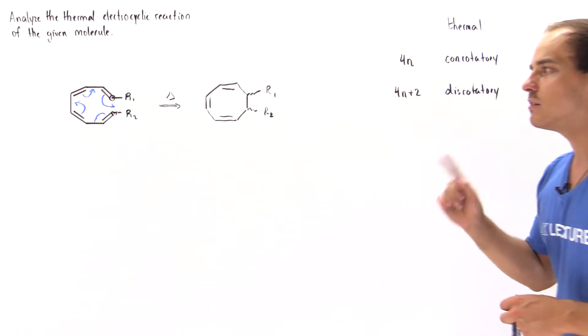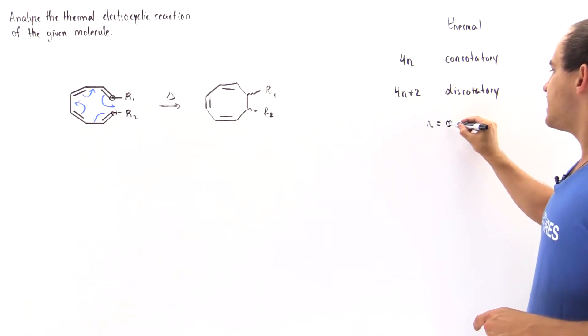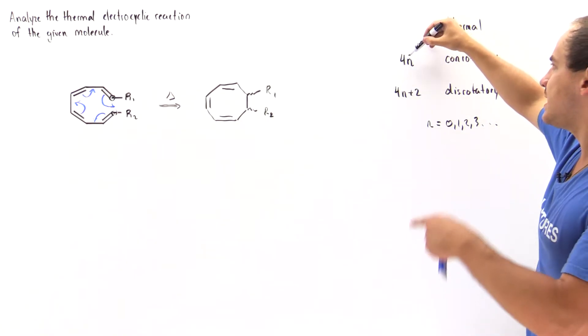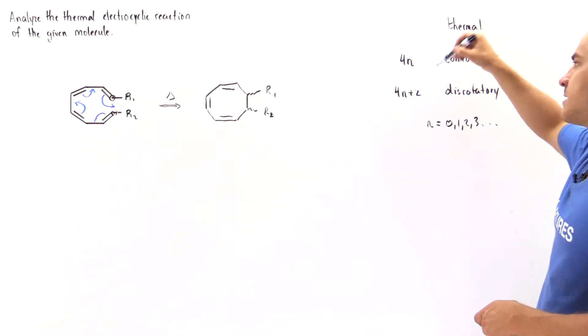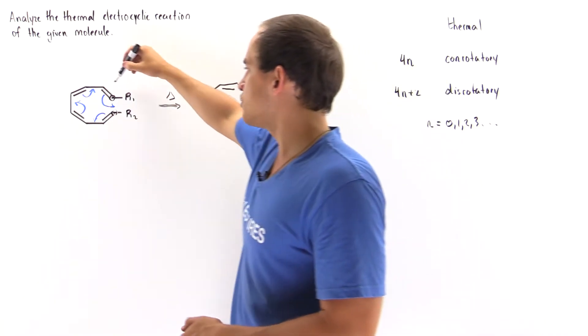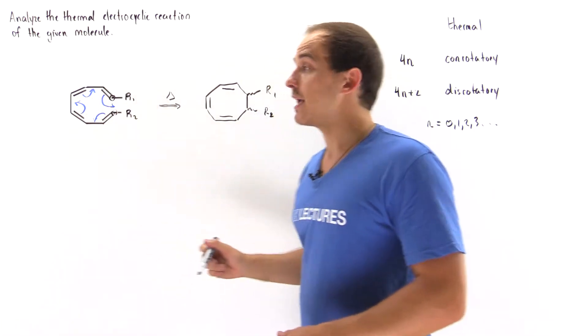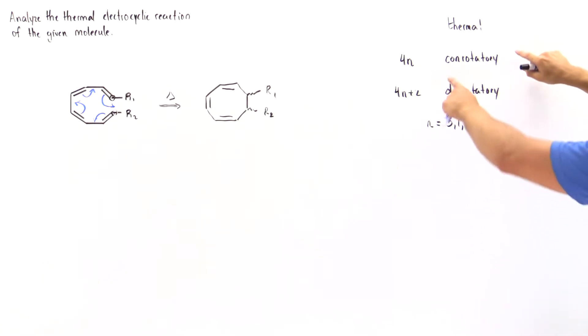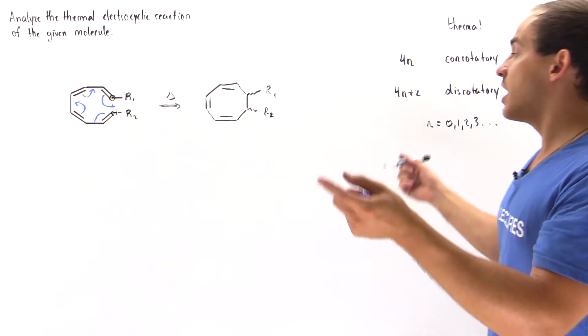Well let's count how many pi electrons we have. By the way, n is a number that can be 0, 1, 2, 3, and so forth, corresponding to 0, 4, 8, 12 pi electrons for 4n, and 2, 6, 10, 14 pi electrons for 4n plus 2. So we have four pi bonds, that's 8 pi electrons, and that fits the 4n criterion. And so because we are under thermal conditions and we have 8 electrons, our motion is conrotatory. They rotate in the same exact direction.